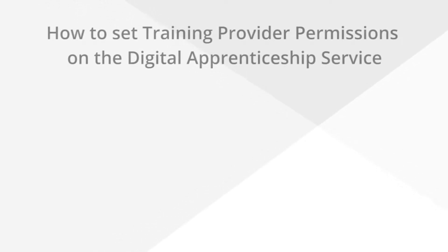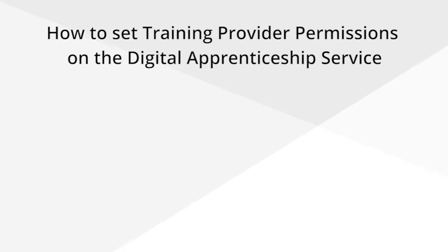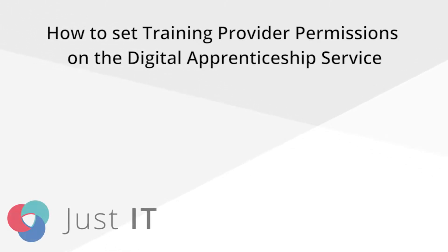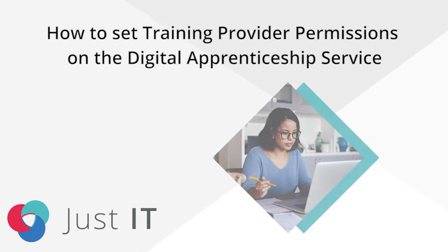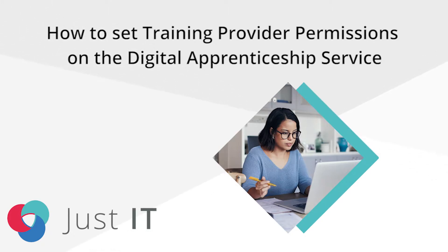This video will take you through the process of how to set permissions on the Digital Apprenticeship Service to allow your training provider to recruit apprentices and add apprentice records on your behalf. Please note that your provider will not be able to access your accounts, and you can change permissions for a provider at any time, as well as review and edit anything a provider does.